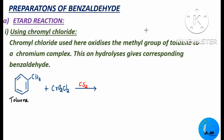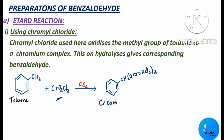Let me write and show you what is happening here. The benzene ring with the CH3 group combines with chromyl chloride in the presence of CS2 to form a chromium complex: CH(CrO2Cl2)2. This is called the chromium complex. This chromium complex undergoes hydrolysis in the presence of hydronium ion and produces benzaldehyde, CHO. So benzaldehyde is prepared by this Etard reaction using chromyl chloride.